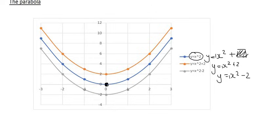The orange graph has a plus 2, which means it's moved two places upwards, and there it is over there. And the gray one is minus 2, and so it's moved two places down.